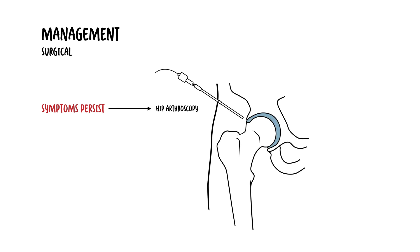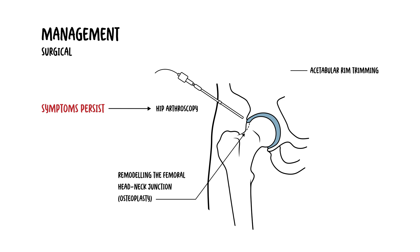If symptoms persist despite conservative measures, hip arthroscopy may be considered. Surgery involves remodeling the femoral head-neck junction (osteoplasty) and/or acetabular rim trimming, along with labral repair if needed. Outcomes are generally favourable in well-selected patients, especially if performed before the onset of advanced osteoarthritis.